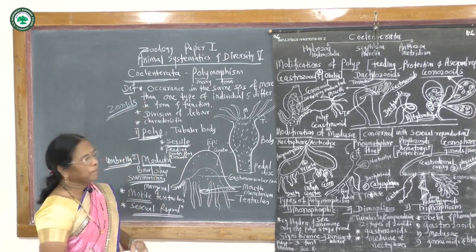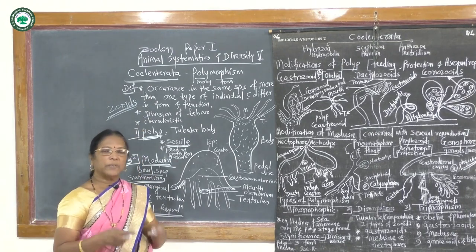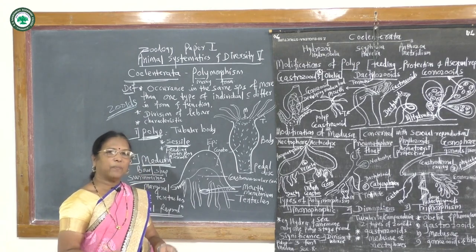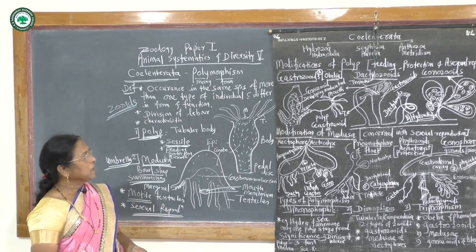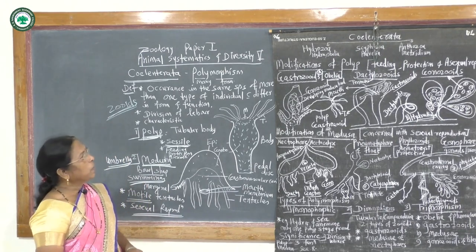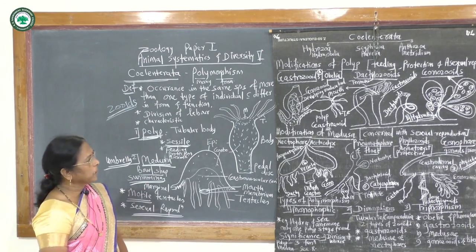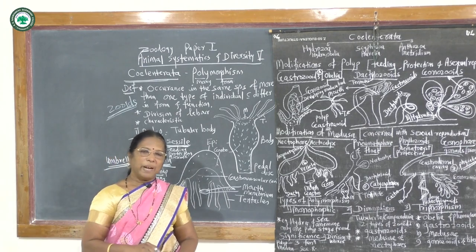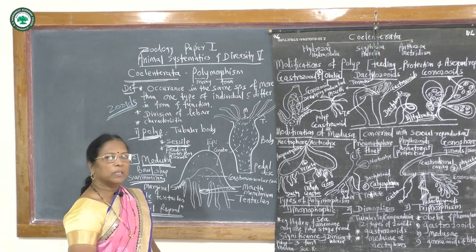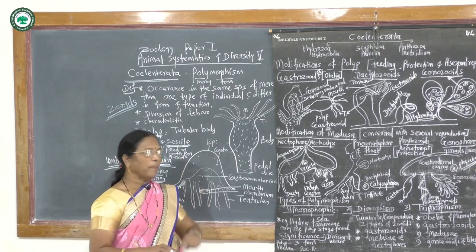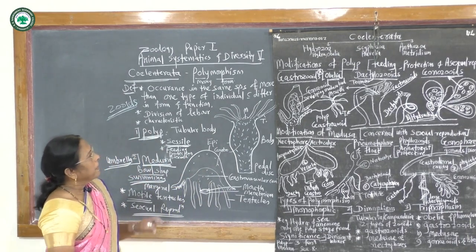In Coelenterata, polymorphism shows division of labor where work is divided for the colony. Some individuals are for feeding, some for protection, some have sensory cells, some have chitinous projections for protection, and some have nematocysts that secrete toxic fluid for protection from enemies. Hence there is division of labor found in polymorphism of Coelenterata.